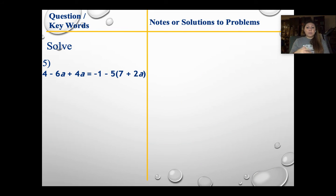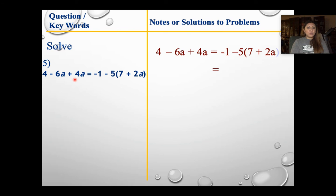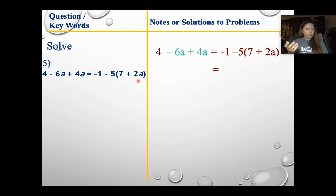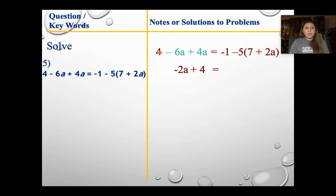This is our last one practicing just solving variables on both sides. For the rest we'll cover identity and no solutions, then a couple of word problems. So what do we do with this one? On the left we don't see any parentheses, so I'm going to combine like terms. Negative 6a plus 4a — negative 6 plus 4 gives me negative 2a (negative because 6 is bigger), then bring down the 4. In addition, it's okay to rearrange the order.